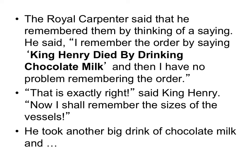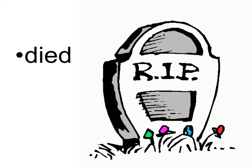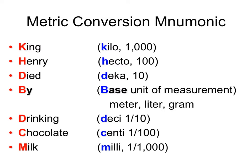King Henry said, 'That is exactly right — now I shall remember the sizes of the vessels.' He took another big drink of chocolate milk and died. So, one of the things that King Henry left us was a mnemonic — anything that helps you remember — to help us convert along the metric system. King Henry Died By Drinking Chocolate Milk: K for kilo, H for hecto, D for deca, B for the base unit (meter, liter, or gram), D for deci, C for centi, and M for milli.